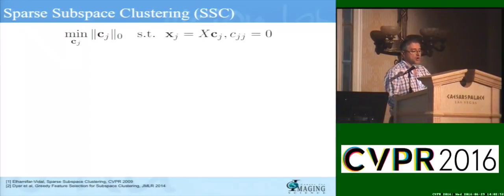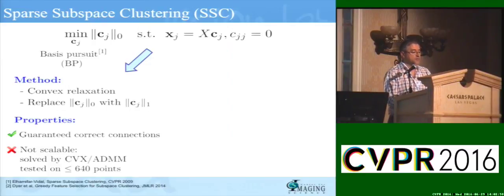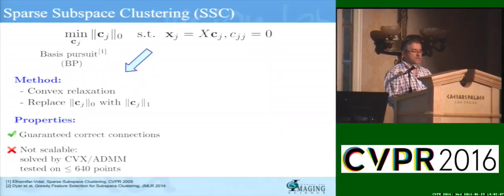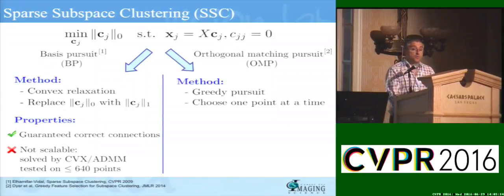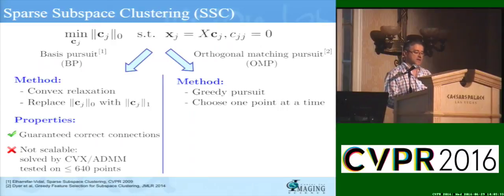Unfortunately, this sparse coding problem is NP-hard and very difficult to solve. The traditional approach has been to relax the L0 norm that counts the number of non-zero entries by the L1 norm. There's been a lot of very nice theory showing you are guaranteed to give the correct connections. However, when solved in practice with CVX or algorithms such as ADMM, the tests done involve up to 640 data points. An alternative method, well known in signal processing, is orthogonal matching pursuit — a greedy method of selecting just one data point at a time to do sparse coding.